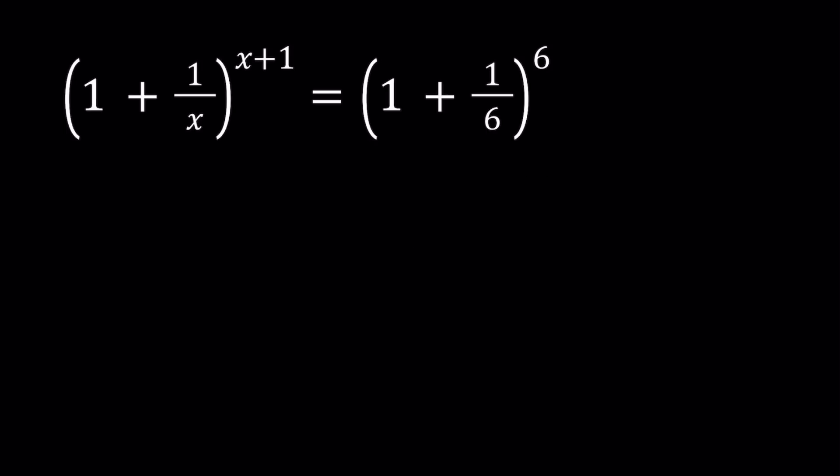How can we manipulate this? I could ln both sides, but I think that'll be a little messy. One thing I want you to notice, that the exponent is 1 more than the denominator. So we have x plus 1 and we have x. Notice that? Great. So now, that is going to be our key to the solution.